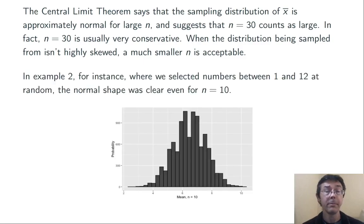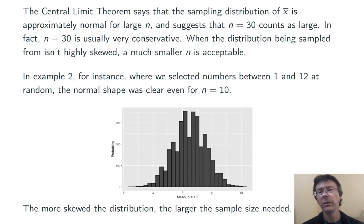We've already seen an example of this. When we were looking at that random number generator that was pulling random numbers between 1 and 12, even when we did samples of size n equals 10, we got a very normal shape already. It's rather jagged just because we did finite samples. In general, the more skewed the distribution that you're sampling from and the worse the outliers you have, the larger the sample you need in order for the central limit theorem to really kick in.